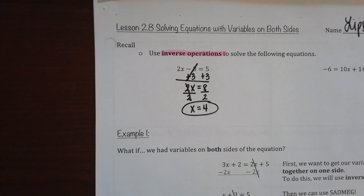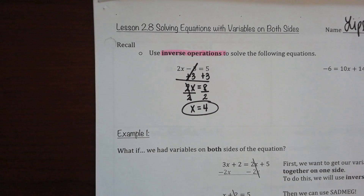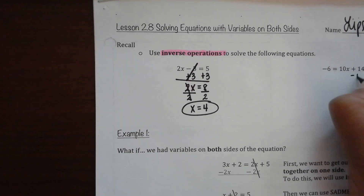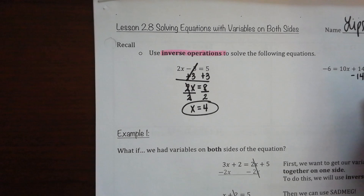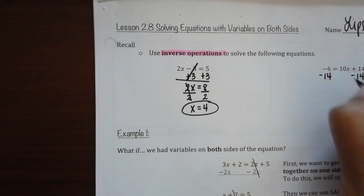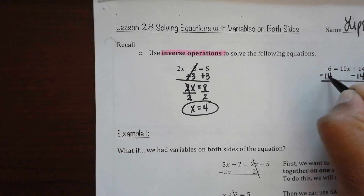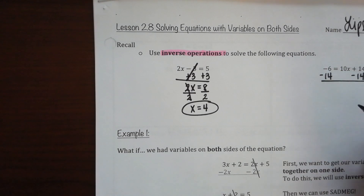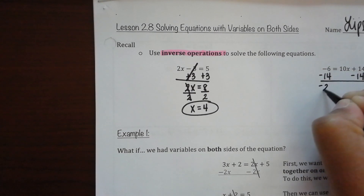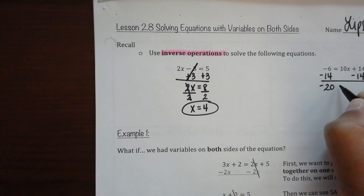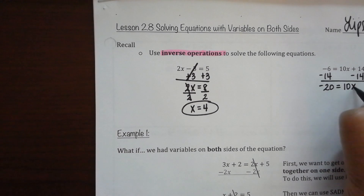Now, looking at the next one. I have negative 6 equals 10x plus 14. What's the first step I need to do? Subtract 14 on both sides. So, what's being typed in? What's negative 6 minus 14? What's being brought down behind that? 5 equals 10x.